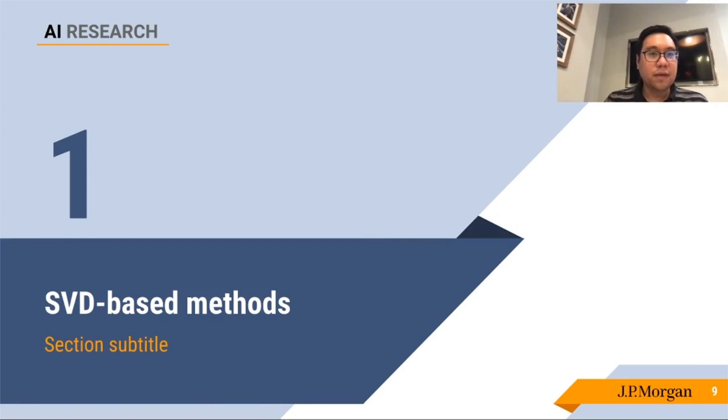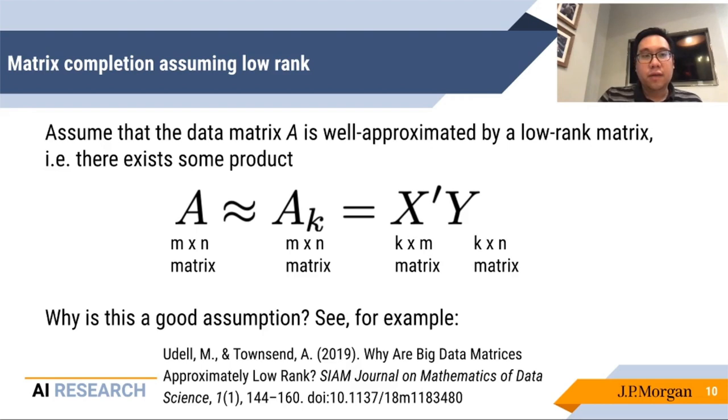The basic assumption here is one of what we call low rank structure. So in specifically, we think of the matrix as being well approximated by another matrix of the same size, that is exactly the product of two matrices, each with k rows. Why this is a good assumption in practice is debatable, but there is some theoretical justification, for example, in the paper below, about why this would be the case for real world data. For now, we'll just assume that this is one of the basic structural assumptions of the data and proceed from there.